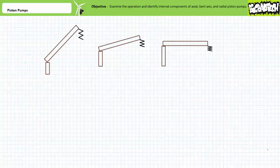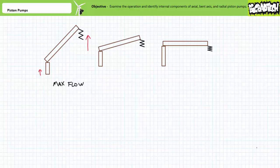Variable displacement piston pumps often use a spring and piston combination to adjust the angle of the swash plate, similar to the method employed by variable displacement vane pumps. When the piston exerts less force than the spring, the swash plate is held at a maximum angle and volume differential is at a maximum. When the piston exerts increasing force, the swash plate is held at less of an angle and the volume differential between the top of the upstroke and the bottom of the downstroke decreases.